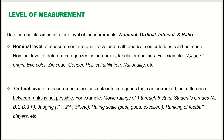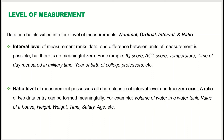To summarize the first two levels: in nominal, the data is completely qualitative with no numbers. In ordinal, you may see numbers like first, second, third, but these are just ranks and you cannot find a meaningful difference between them.